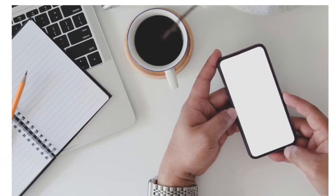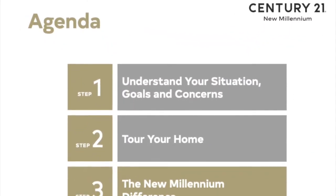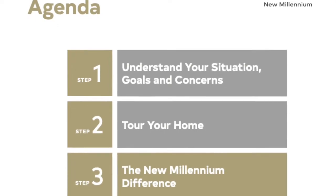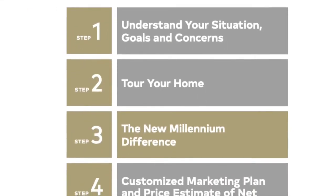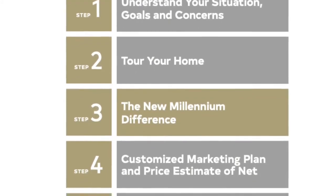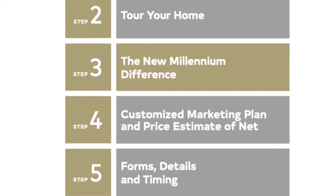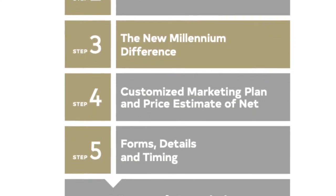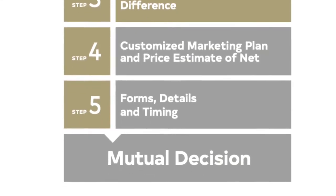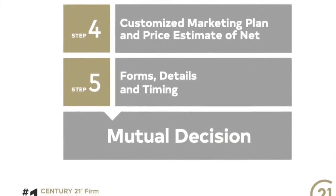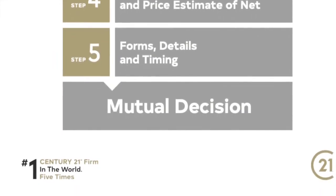My presentation is in five steps. First step is understanding their needs and desires — what are they afraid of? Step two is getting a tour of the home, and I usually combine the two together. Step three is talking about the New Millennium difference, which I combine with step four — talking about their marketing plan, where we're going to advertise for that particular house. Then finally, we start talking about forms, details, and the CMA. I don't get into the CMA until after I show them all the things that I do in marketing their home.